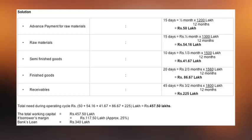So we have seen the five stages: advance, raw material, semi-finished, finished, and receivable stage. The total of the working capital requirement at each stage gives us the total working capital requirement.